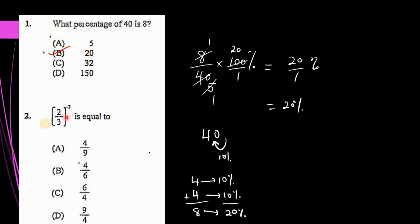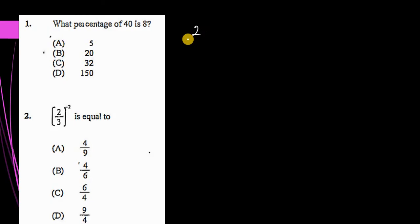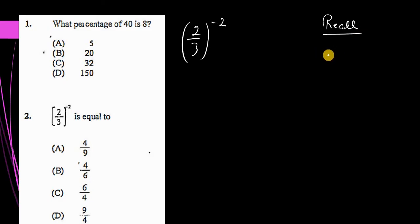Now let's go on to question 2. Looking at question 2, we recognize that we have 2 divided by 3 to the power of negative 2, and we want to simplify this. We're given the options: 4/9, 4/6, 6 over 4, and 9 over 4.